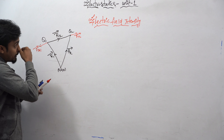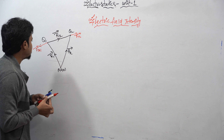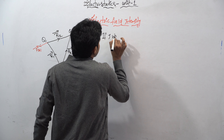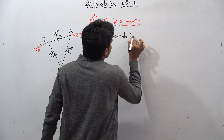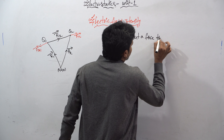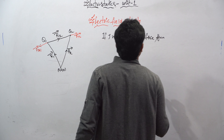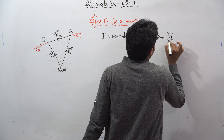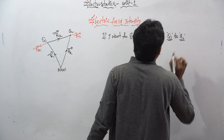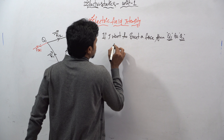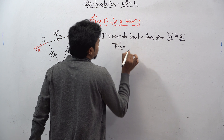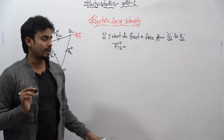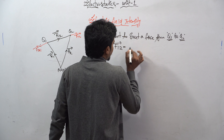This was the concept discussed in the previous session. Now, if I want to exert a force from charge q1 to charge q2, that becomes f12 bar. You already know Coulomb's Law: F is directly proportional to q1 times q2 divided by r squared.